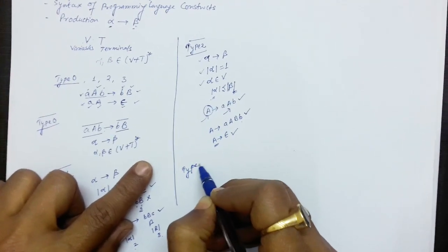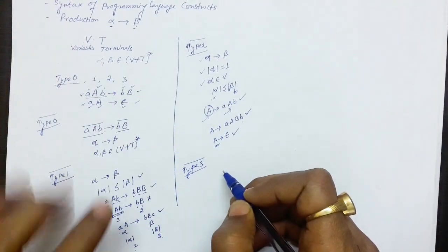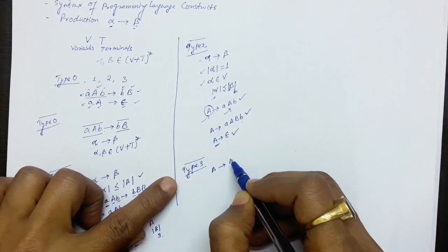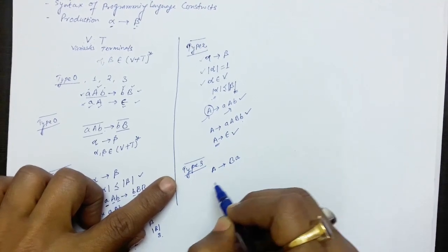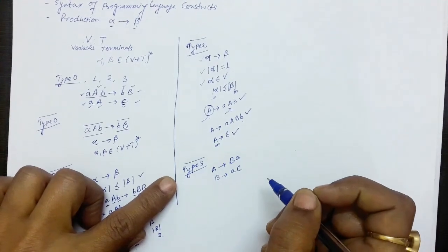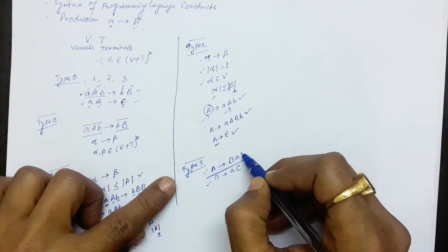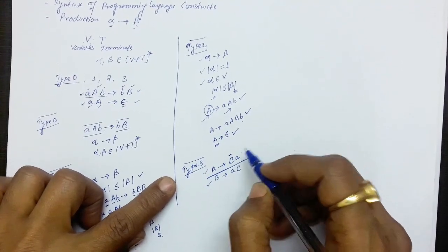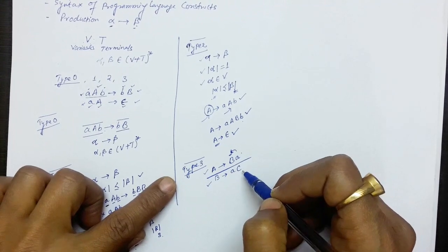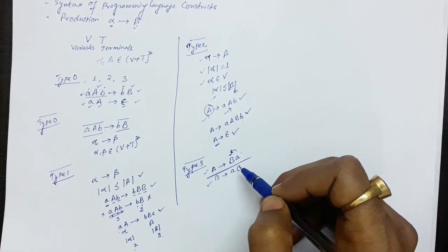For type 3 grammar, we apply the maximum number of restrictions. The restrictions already applied in type 2 continue. But we apply additional restrictions. For example, a production like A produces BA, or B produces AC. In this grammar, the non-terminal symbol on the right hand side is exactly one, and that non-terminal symbol is towards the left. There must be no more than one non-terminal symbol on the right hand side, and that non-terminal must be exactly one.